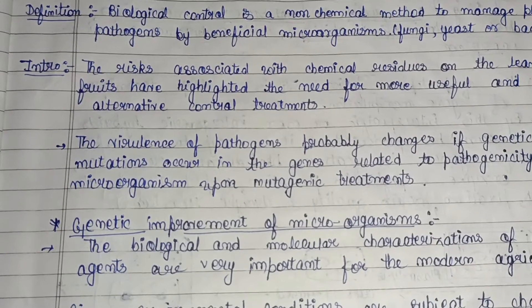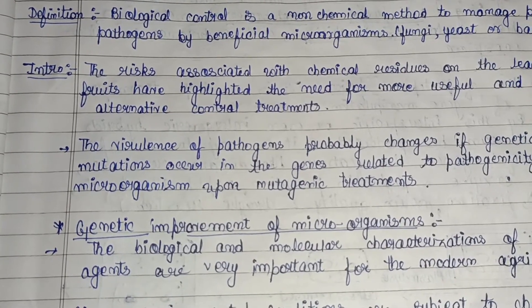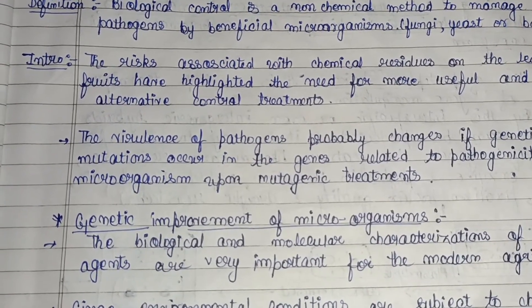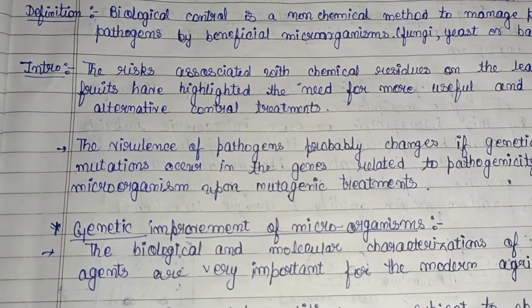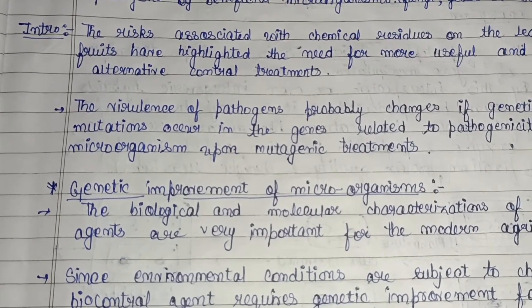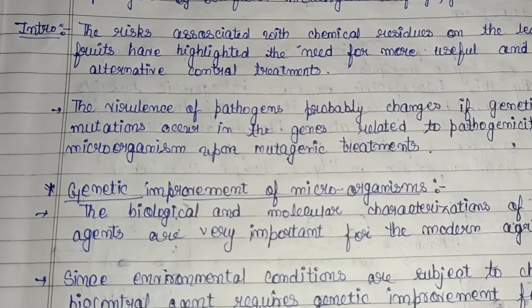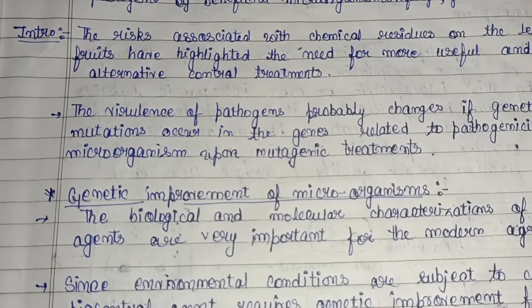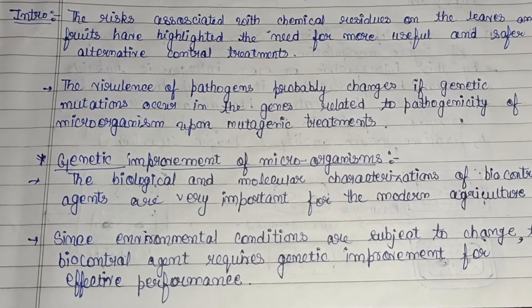The virulence of pathogens can change if a genetic mutation occurs in relevant genes. The virulence of a pathogen can be changed by altering the gene related to pathogenicity through mutagenic treatment. Mutation is a change in the DNA sequence. In this method, the plant pathogen is irradiated with UV, gamma, or ionizing radiations, causing a change in their DNA sequence, and their ability to cause disease is decreased.